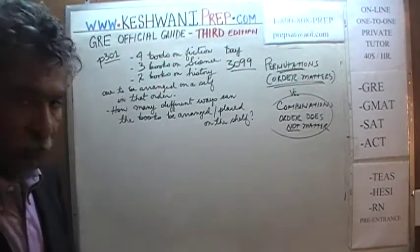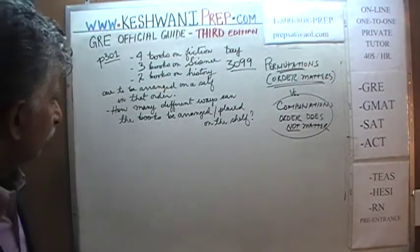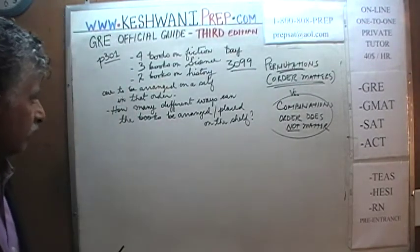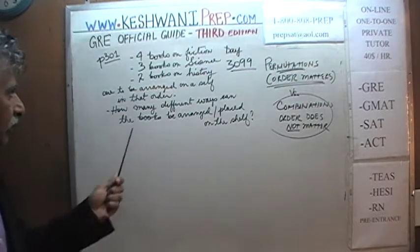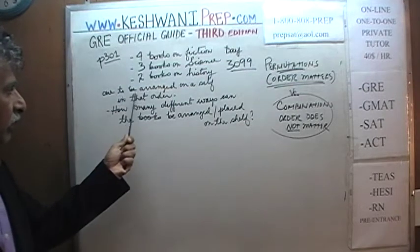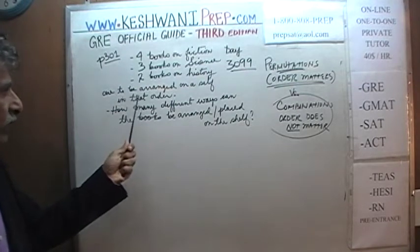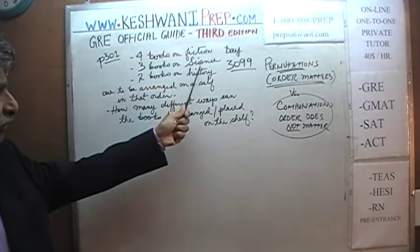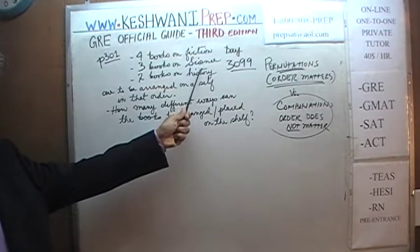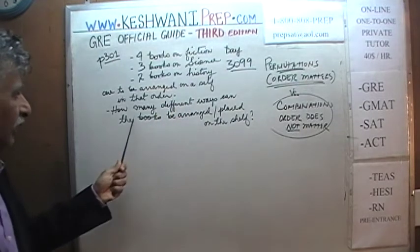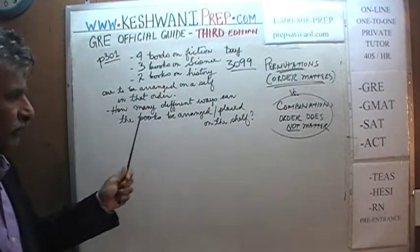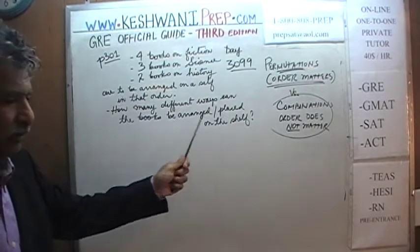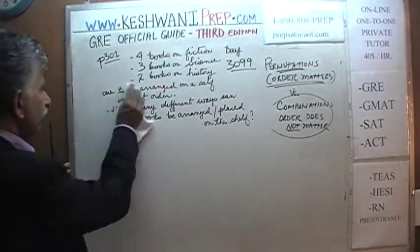If you want to do it yourself, you can pause the video and then compare your work against what we are about to do. So one more time: we are going to arrange them on a shelf — they have to be in that order: first books on fiction, then science, then history. How many different ways can we arrange them?